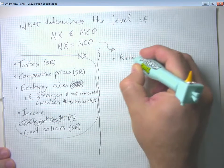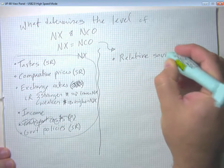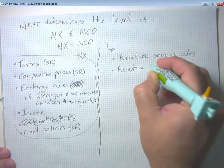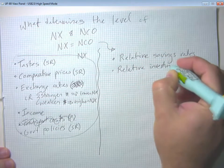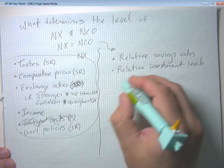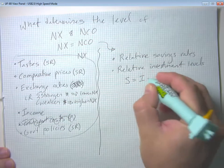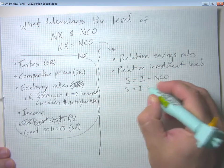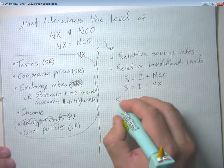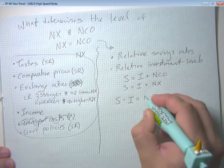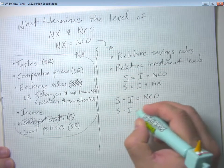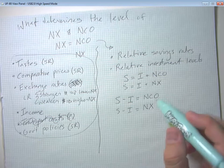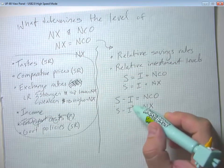So the big one that we think impacts relative capital flows is relative savings rates and relative investment levels. And in particular, remember that we had said that national saving equals investment spending plus net capital outflow. Or we could equivalently say national saving equals investment spending plus net exports. Well, if we bring the investment spending over to the left hand side, then we get equations that look like this. Savings minus investment equals net capital outflow or equals net exports.